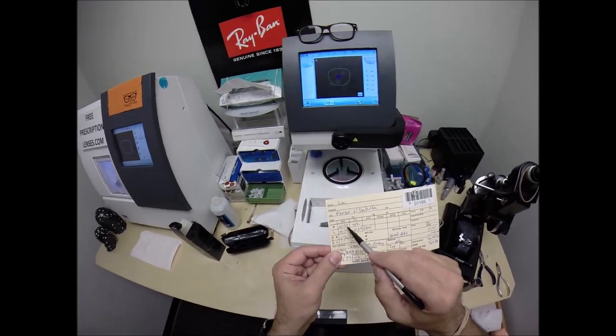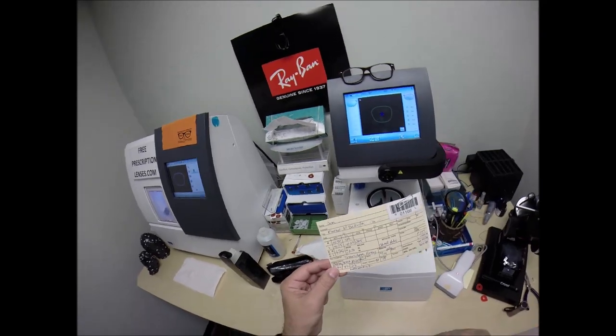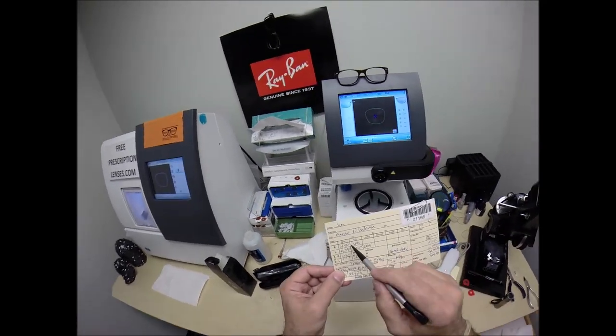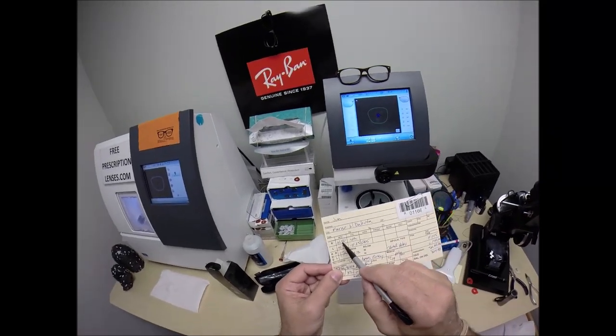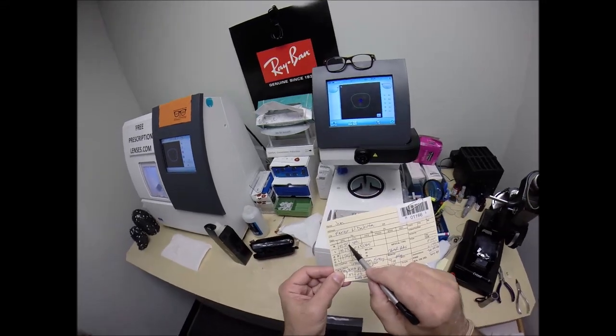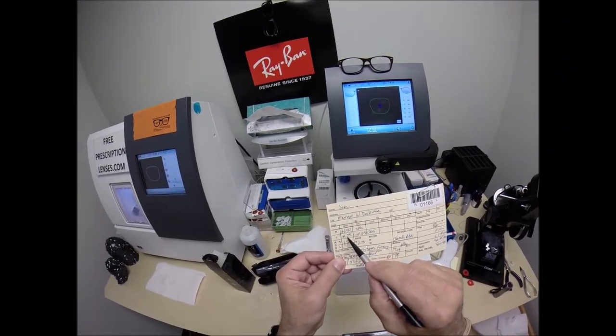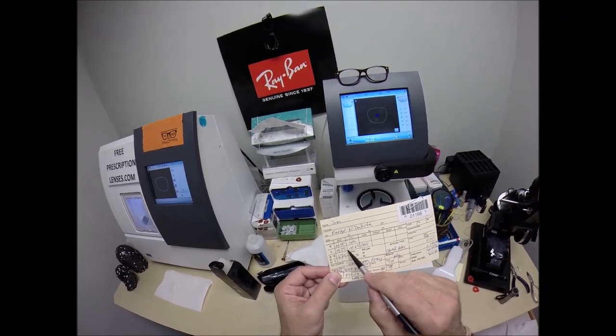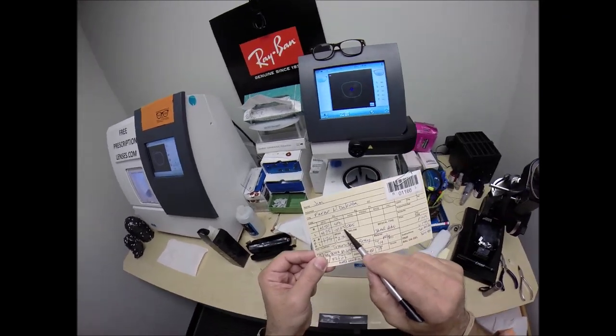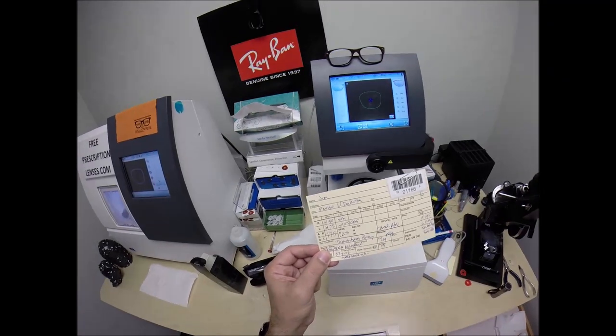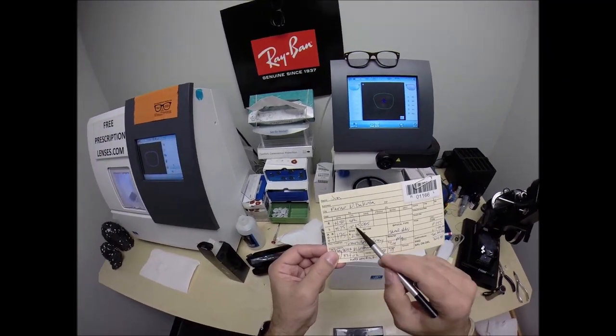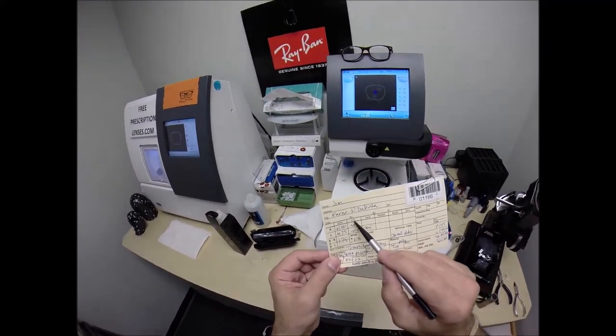So you need six steps of nearsighted correction to be able to see better up close. Now your left eye, you need seven steps of correction. You're on the seventh rung of a ladder there. And you have one step of astigmatism correction, which is the smallest you can have. There's a stigma over the word astigmatism, also known as cylinder, the abbreviation C-Y-L.